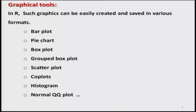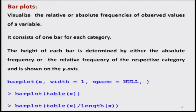In R, there are various types of graphics that can be created: bar plot, pie chart, box plot, group box plot, scatter plot, co-plots, histogram, normal quantile-quantile plots, and everything. There is a long list. But here we are going to learn about some elementary graphics. First of all, we start with a simple plot which is the bar plot.